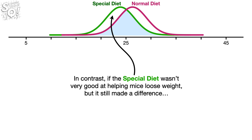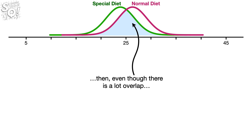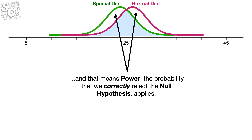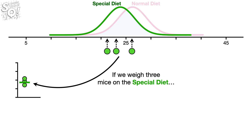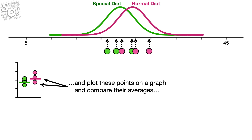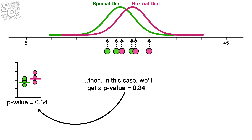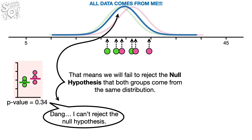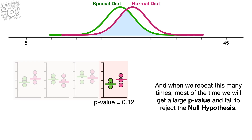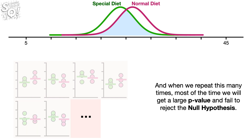In contrast, if the special diet wasn't very good at helping mice lose weight, but it still made a difference, then even though there is a lot of overlap, we have two distinct distributions. That means power — the probability that we correctly reject the null hypothesis — applies. If we were to weigh three mice on the special diet and three mice on the normal diet, and plot these points on a graph and compare their averages, we will get a p-value equal to 0.34. That means we will fail to reject the null hypothesis that both groups come from the same distribution. And when we repeat this many times, most of the time we will get a large p-value and fail to reject the null hypothesis.